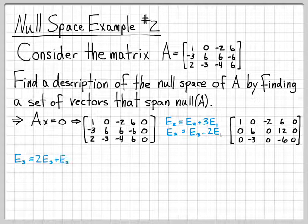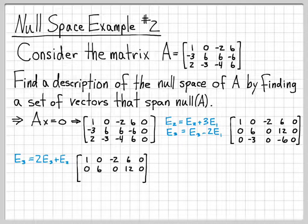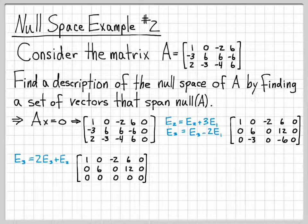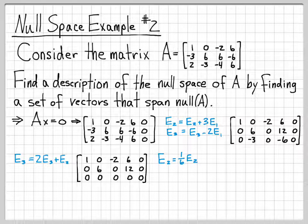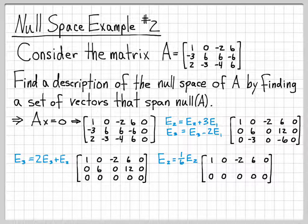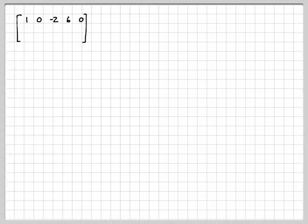And then let's go ahead and replace E3 with 2E3 plus E2. And equations 1 and 2 won't change, but now equation 3 looks like this. And again, all I'm trying to do is get down to this reduced form where I can pick off the solution easily. If I replace E2 with 1/6E2, I can turn that into a 1, which was something I would like to do. So equations 1 and 3 don't change, but equation 2 now transforms into this. And now I like this form.